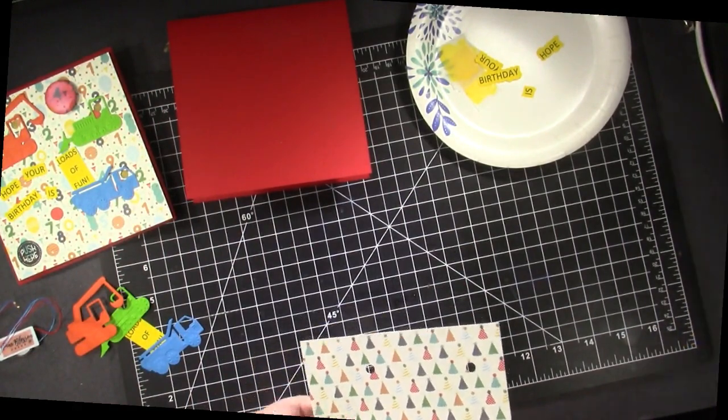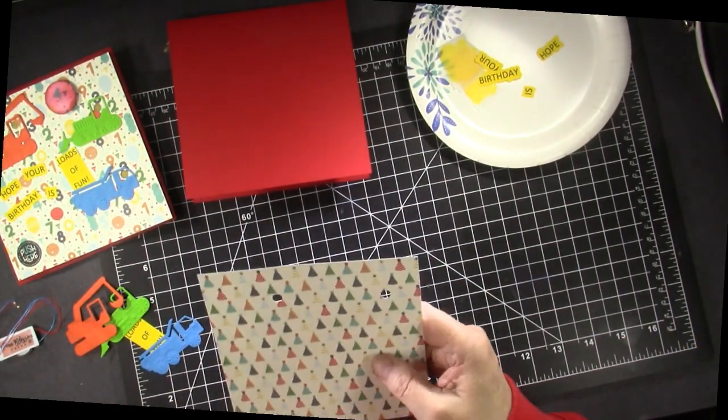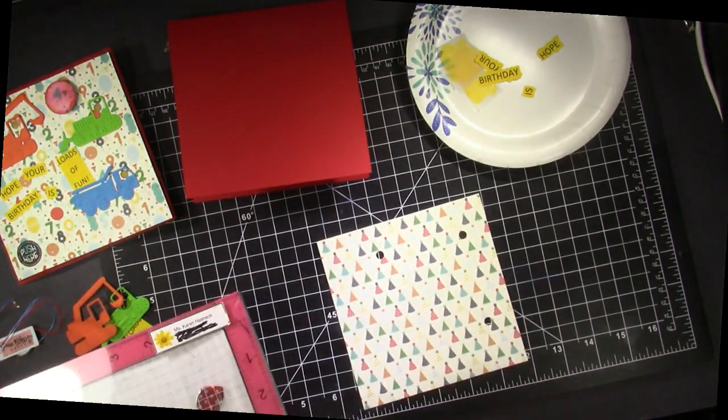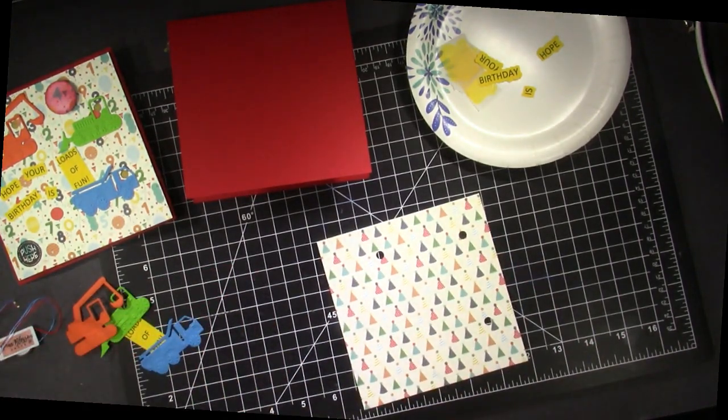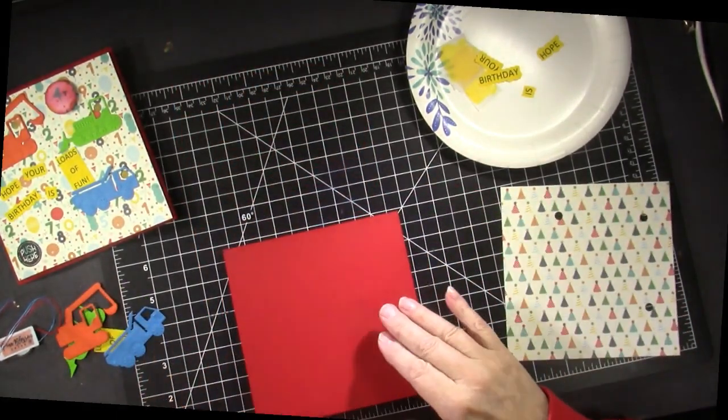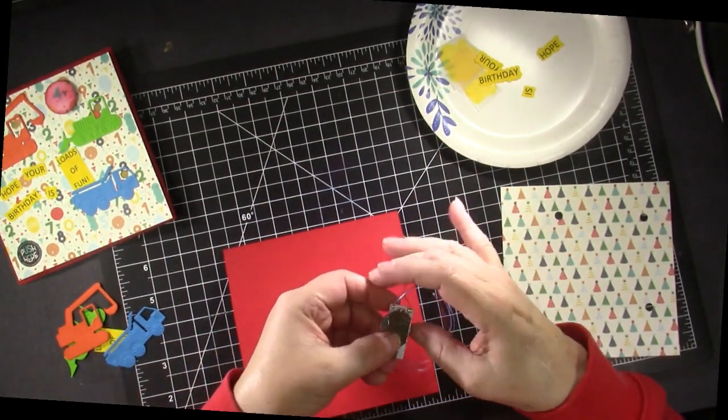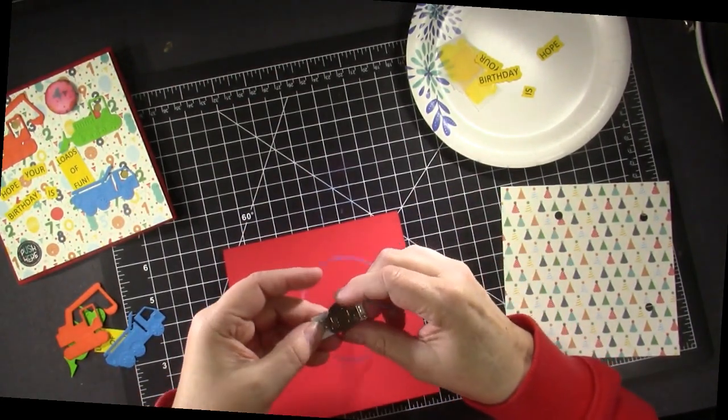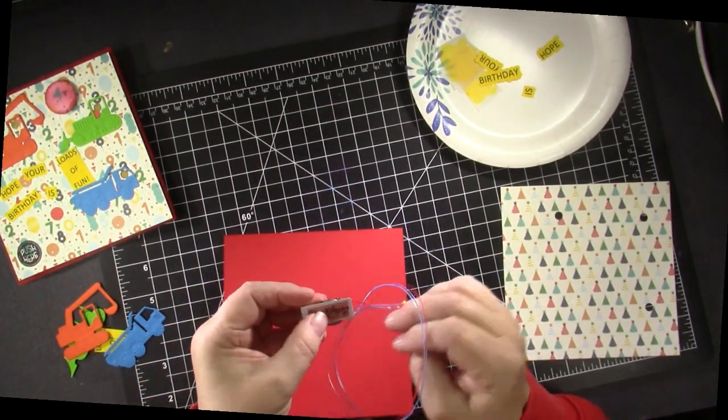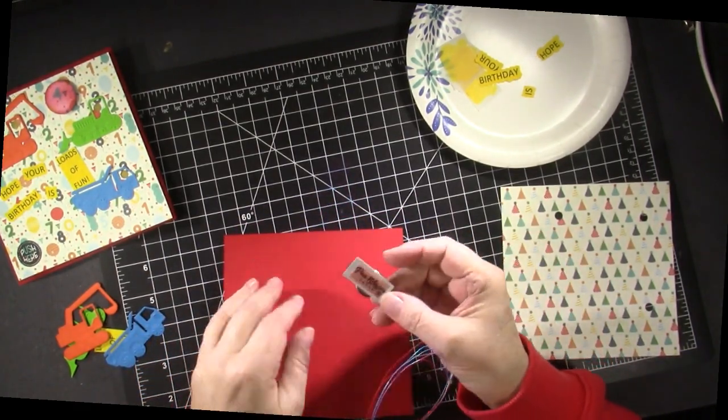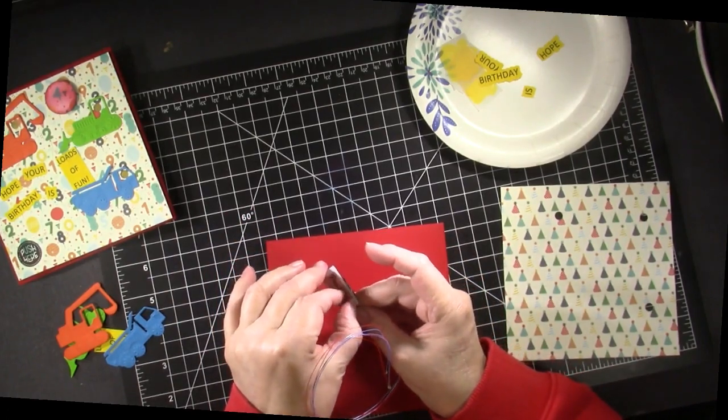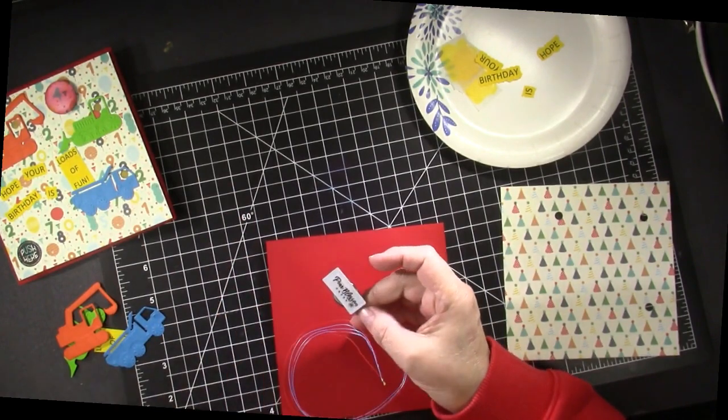I am going to stamp the 'push here' on there, but first we need to attach this. So this is what the unit looks like and as I showed you I just pushed that battery in and the three lights are going to light up. I put strong two-sided tape on the back of the battery pack part.